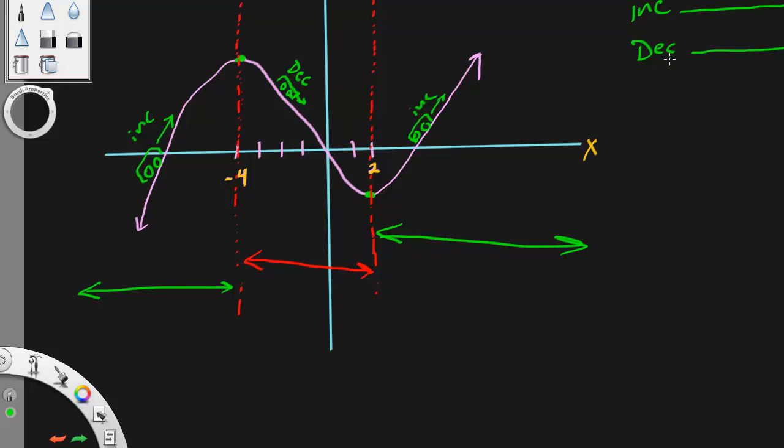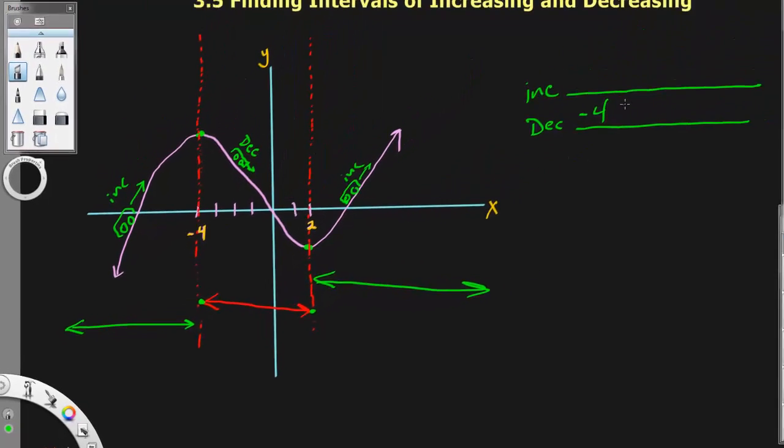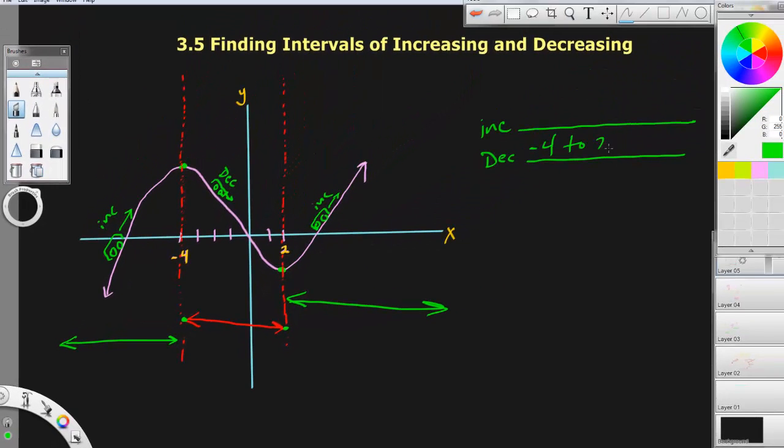So, when you go to put math to these intervals, let's just look at the decreasing part. It's from here to here, okay? That's where it's decreasing. It's from negative 4 to 2. It has nothing to do with these Y values. People get that messed up all the time. It's negative 4 to 2. That would work just fine for decreasing.